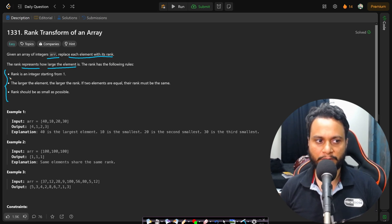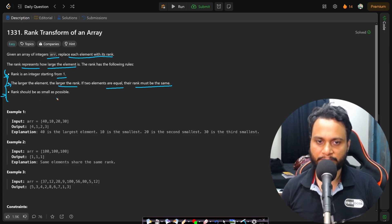The rank has the following rules: rank of an integer starts from 1, the larger the element, the larger the rank. If two elements are equal, the rank must be the same and the rank should be as small as possible.